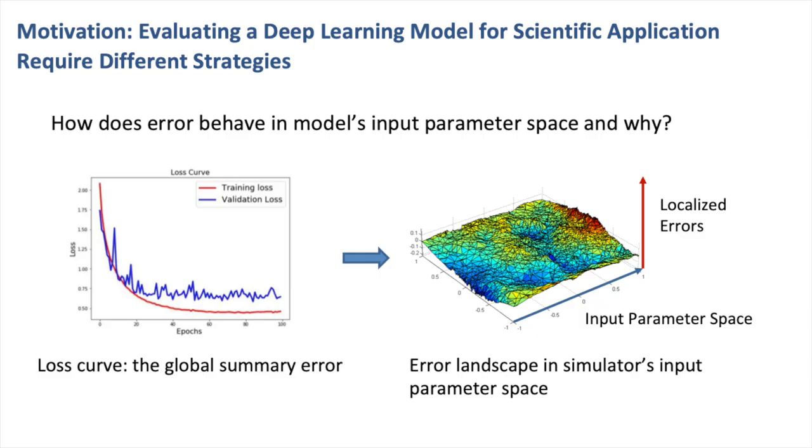For example, for evaluating a simulation surrogate, domain scientists are not only interested in the overall error and convergence behavior, but also how the model performs at given input-parameter combinations.